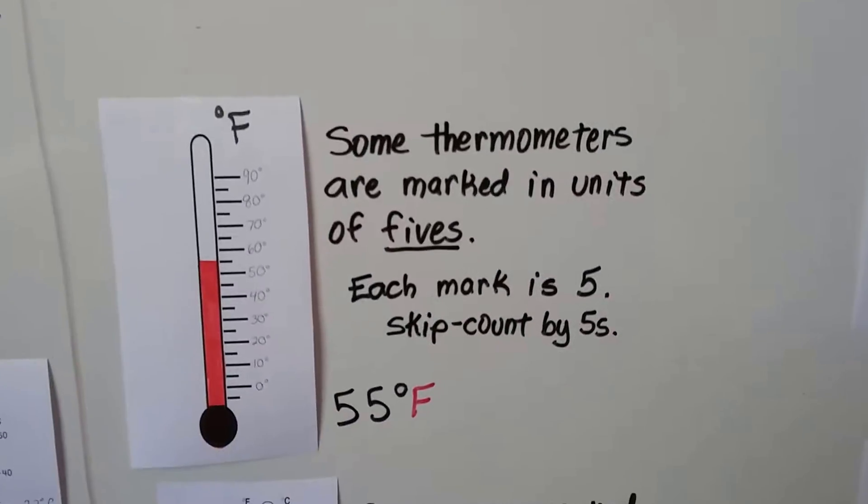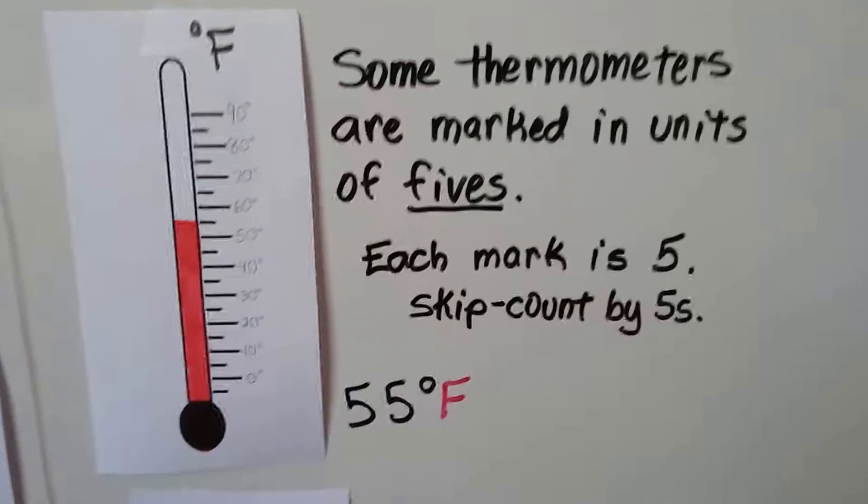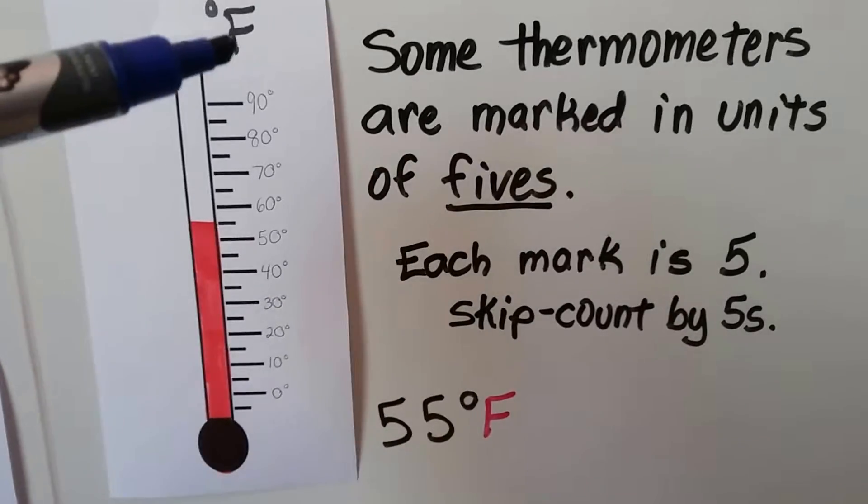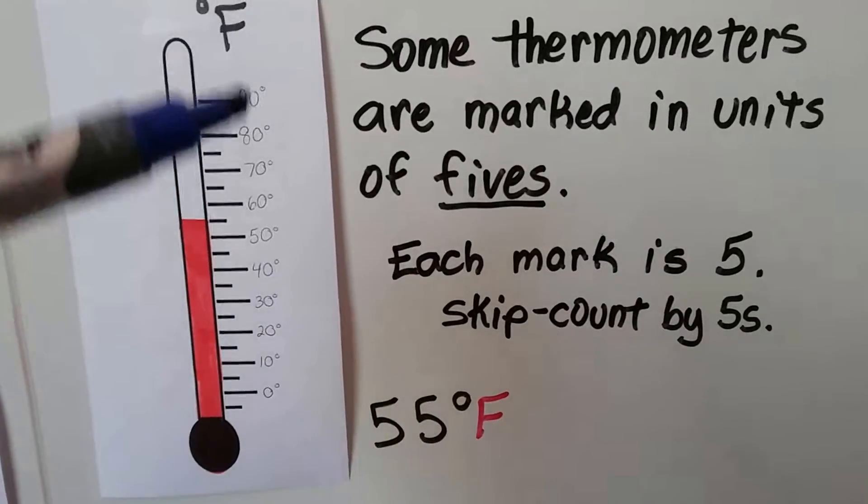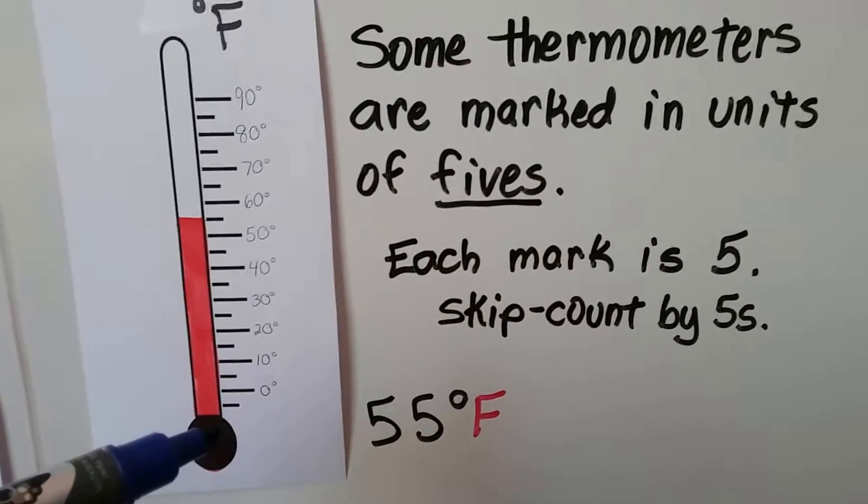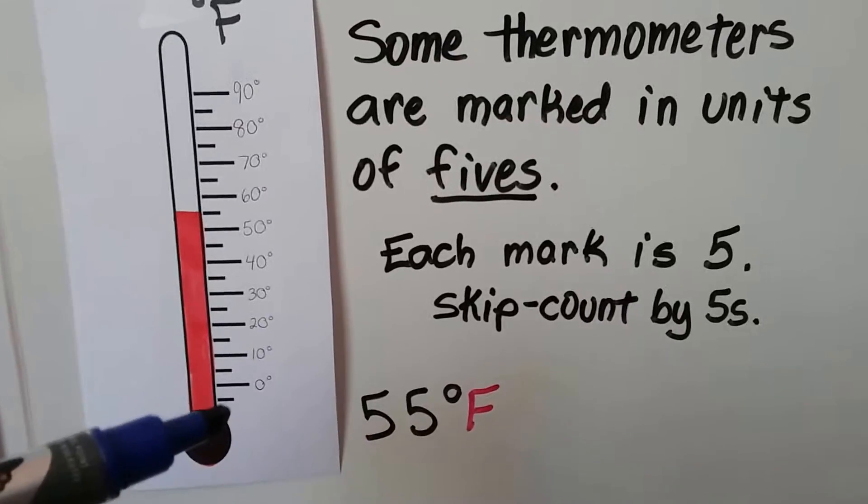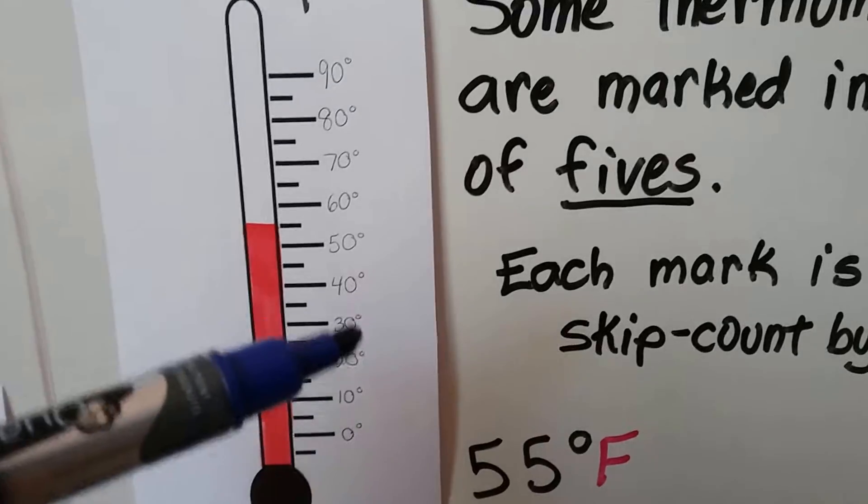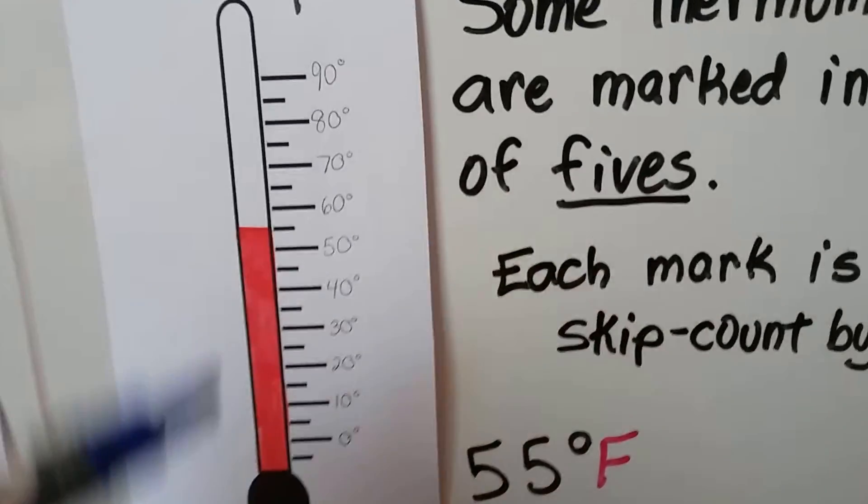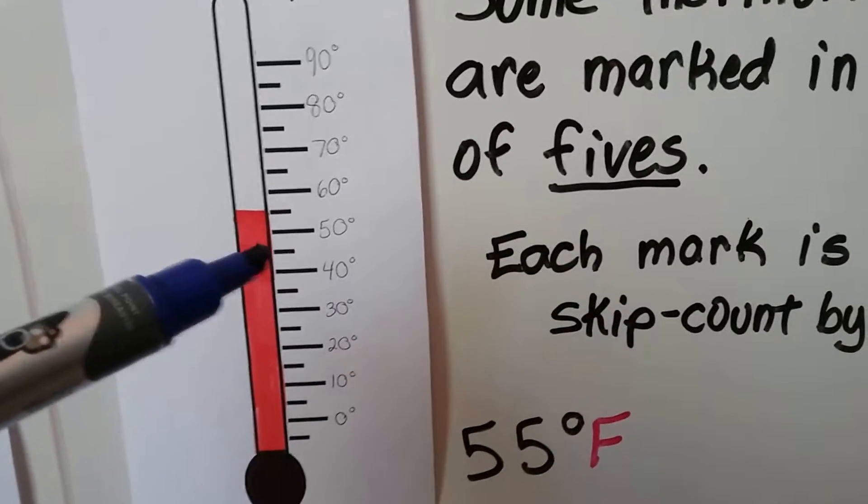Some thermometers are marked in units of fives. So here's a thermometer for Fahrenheit. We can see the F here. We can see the numbers. And there's not that many lines, are there? There's just a few lines. And we can see how it skip counts by tens. See? It goes from 0 to 10, 20, 30, 40, 50, 60. And there's only one line in between them.